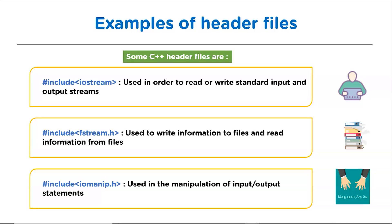Next is fstream. fstream is associated with files — it is basically used to read information from files and write information to them. Next is iomanip. iomanip is a library that is used in the manipulation of input and output statements.